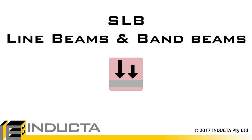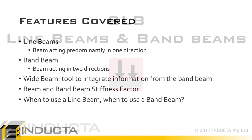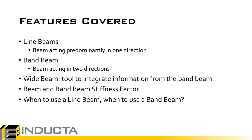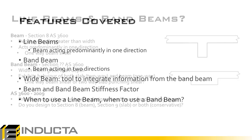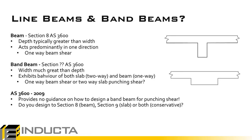This video will go through band beams and line beams in the SLB software. Before we look at the program, we'll quickly review what we mean by a line beam and a band beam. A line beam is a conventional one-way beam with a depth typically bigger than its width, and it exhibits predominantly one-way behavior, designed according to section 8 of AS3600. A band beam generally is wider than it is deep and exhibits behavior of both a slab and a beam.